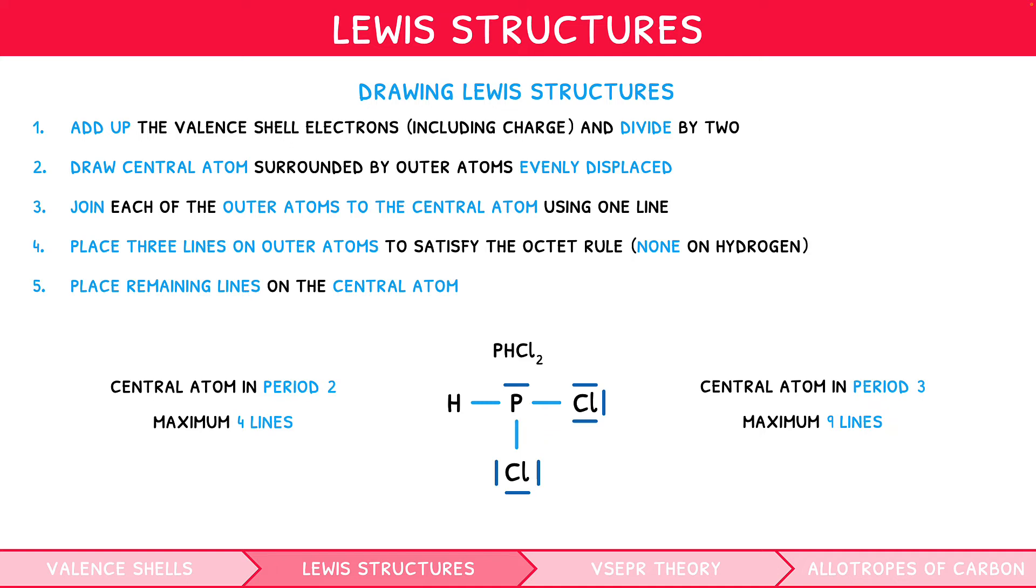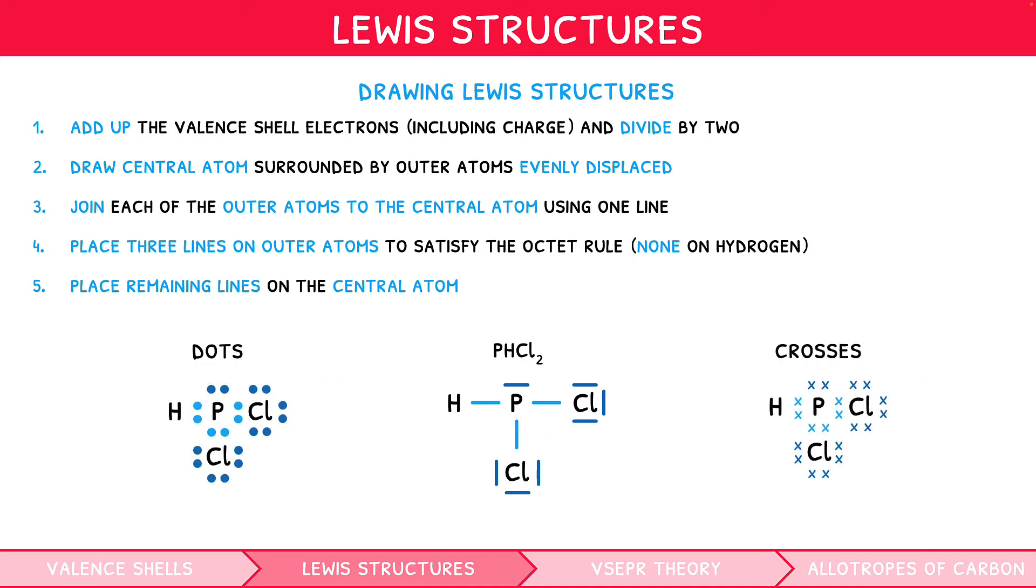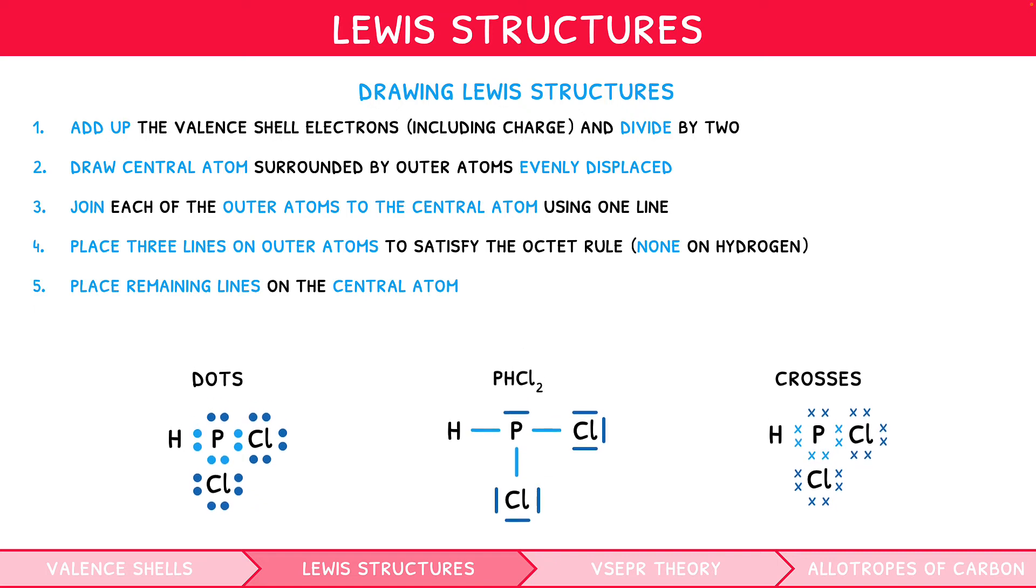It is worth noting that you may have learnt a slight variation on drawing a Lewis structure. Electrons can also be represented using dots or crosses, including for lone pairs. However, for this video, we will continue to use lines.